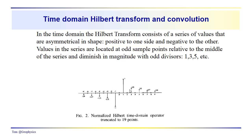Here we've got the operator. Remember, the Hilbert time domain operator in the positive direction consists of sample values where even values are zero and odd number values are reciprocals of the odd numbers: one, one-third, one-fifth, one-seventh, and so on.